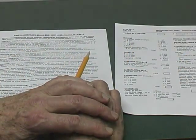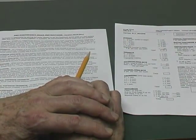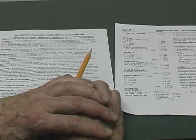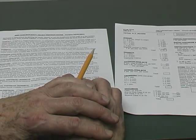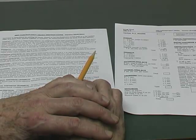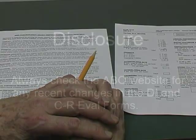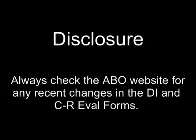This is the end of the discrepancy index demonstration. I hope that it has been helpful. You can now move to the cast radiographic evaluation form in the second part of the demonstration. Thank you for your kind attention. The ABO continually evaluates the measurement instruments and makes changes in the instructions. Those alterations are posted on the ABO website. Always double check for any recent changes.